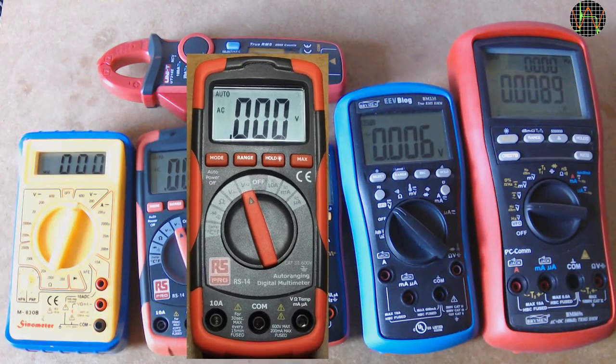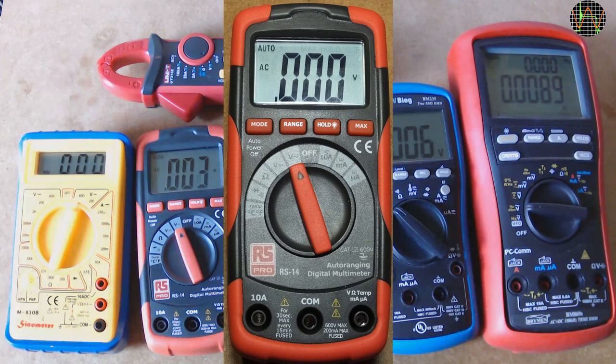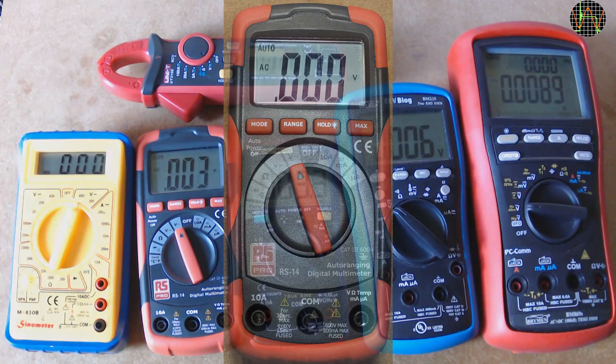The RS-Pro RS-14? No, not true RMS, but compared to the Sinometer, this has proper AC voltage and current ranges. This sells currently for £26 in the UK.